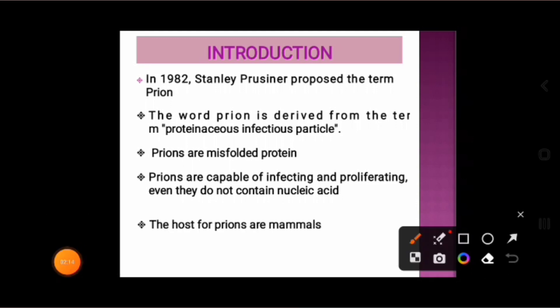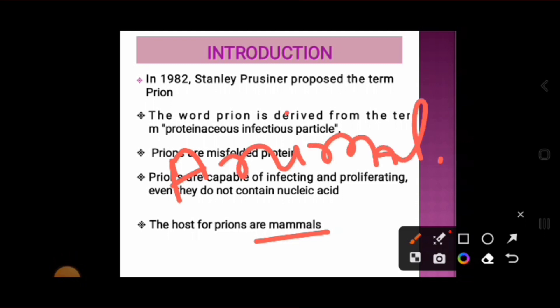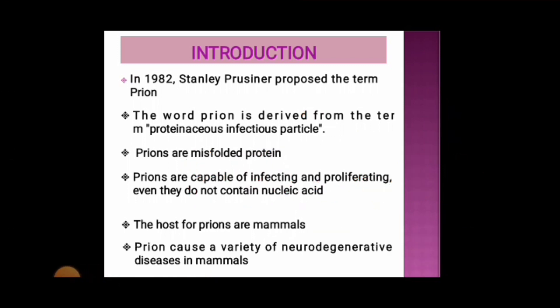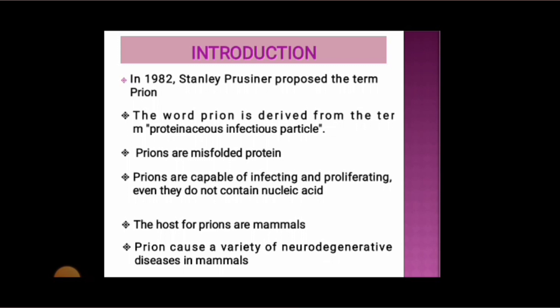The hosts for prions are mammals — either animals or humans. Prions cause disease in both humans and animals. No prion disease in plants is known, although prions have been found in yeast. Prions cause a variety of neurodegenerative diseases in mammals. Before discussing how they cause disease and which diseases are caused by prions, let's discuss some important terms.